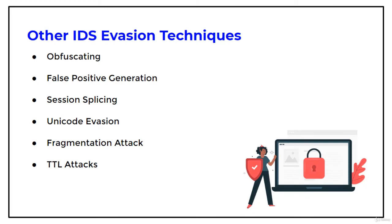Fragmentation attack. Fragmentation can be used as an attack vector when fragmentation timeouts vary between the IDS and the host. If the fragment reassembly timeout is 10 seconds at the IDS and 20 seconds at the target system, an attacker will send the second fragment exactly after 15 seconds. The IDS will drop the fragment, but the target system will reassemble it. The attacker keeps sending fragments with 15-second delays until the attack payload is fully reassembled at the target.